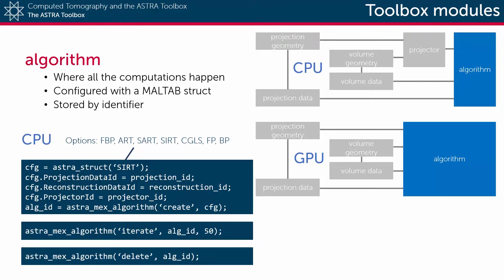For example, to configure a CPU-based SIRT algorithm, a configuration struct is created using the astra_struct function with SIRT as its main argument. Then three pieces of information have to be attached.